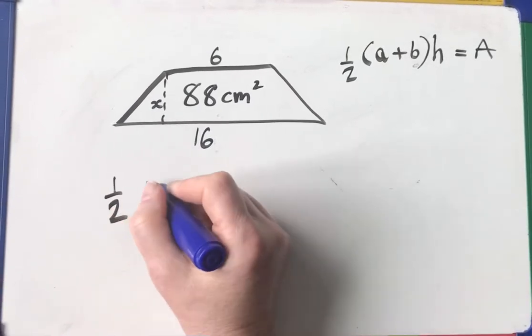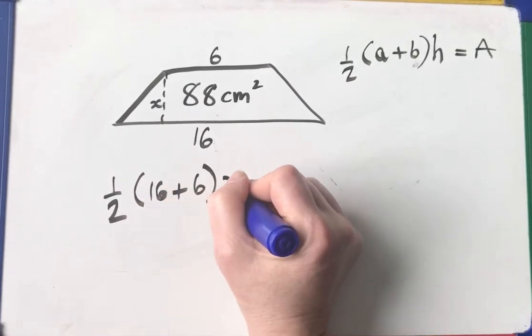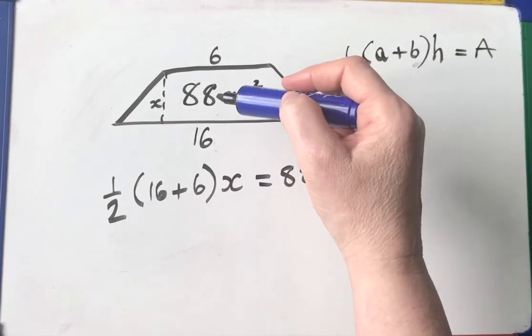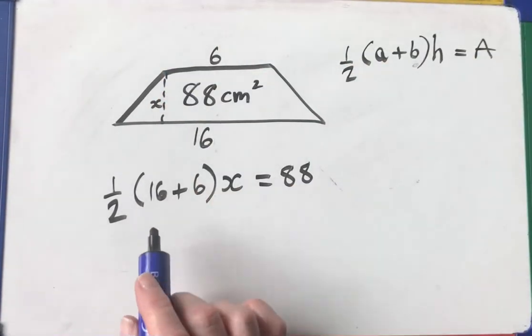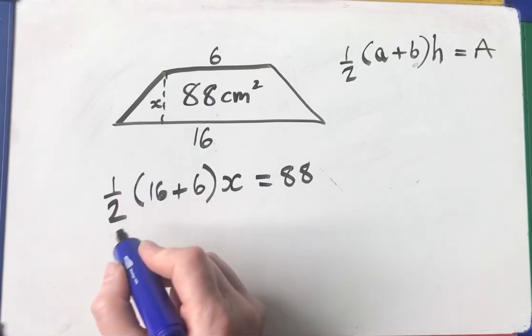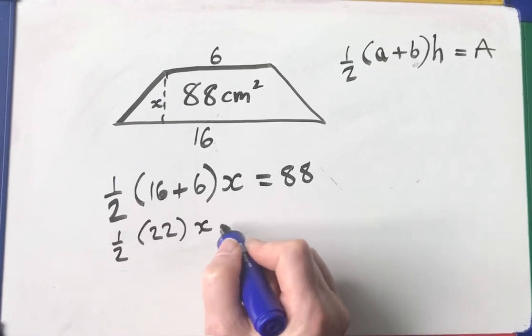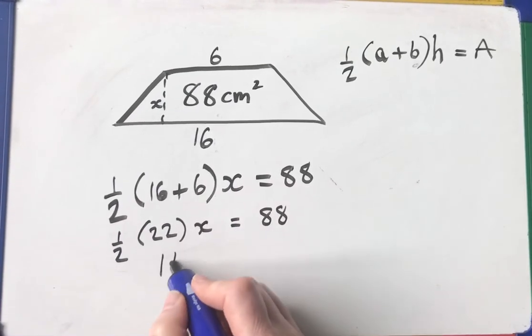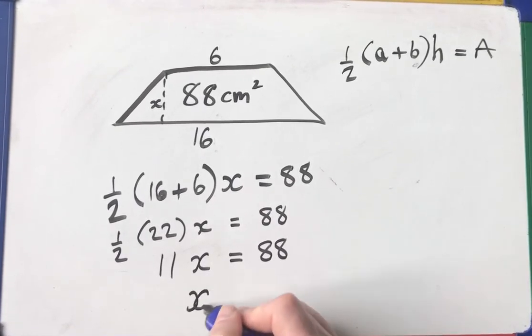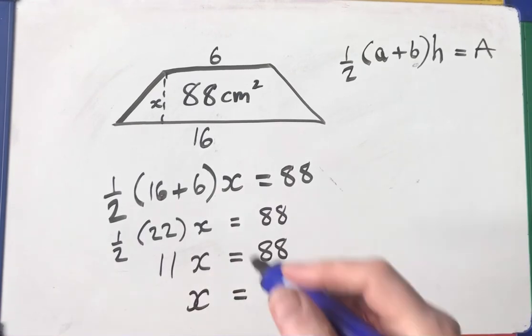A half times 16 plus 6 multiplied by the space between them will give me 88. So add up the parallel sides, half them times it by the height. Let's do bid mass. 16 plus 6 is 22. Half of 22 is equal to 88. Half of 22 is 11. So 11x equals 88. Therefore x equals 88 divided by 11 is 8.